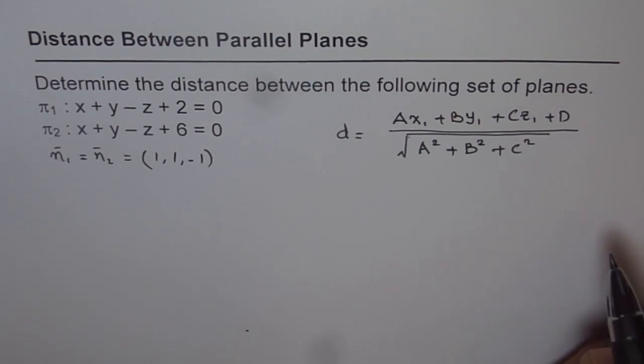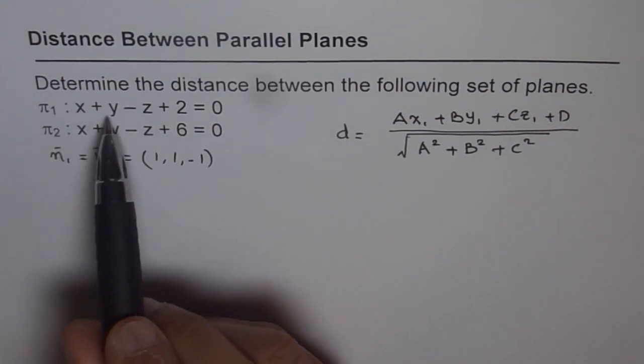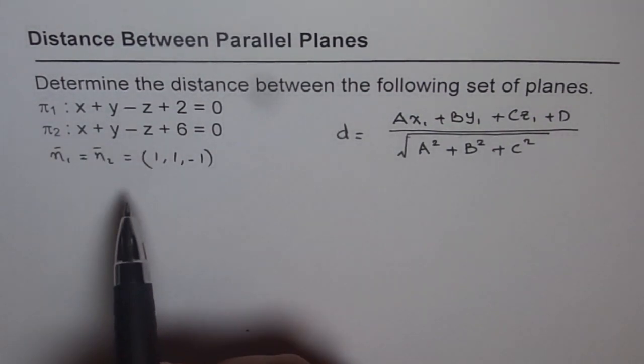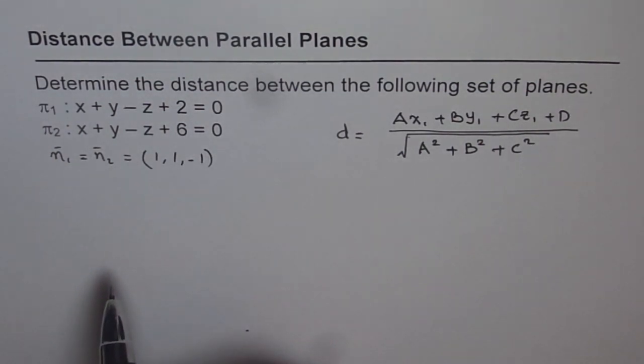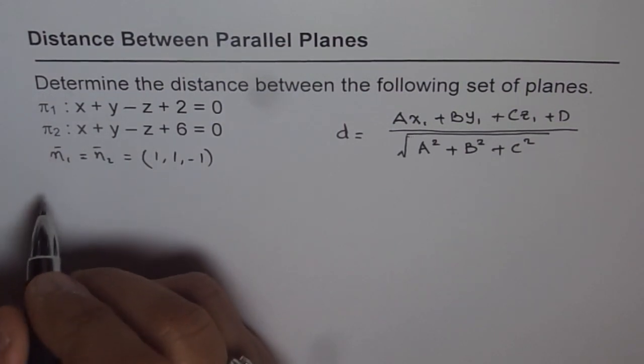What we can do is, the most convenient point to find, in this case, on a plane will be, we can substitute x and y equals to 0, and then find the z point. That means there's a point on the z-axis.